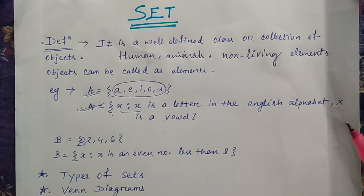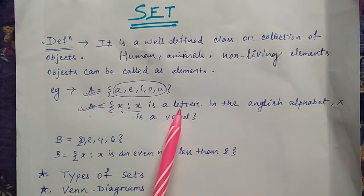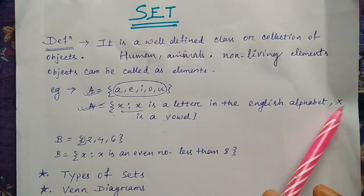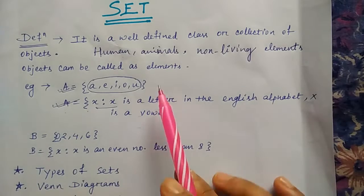It's up to you what kind of set you want to create. The type of set is of many forms. Let's see an example here: A is {x: x is a letter in the English alphabet, x is a vowel}. You know that the vowels are a, e, i, o, u.